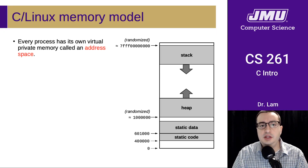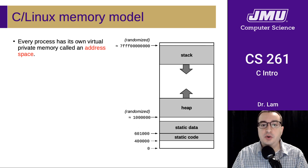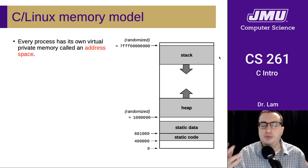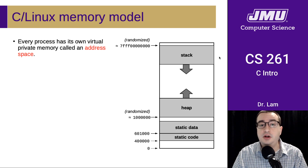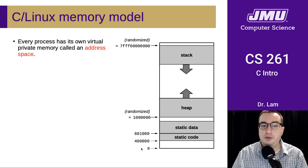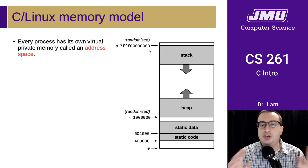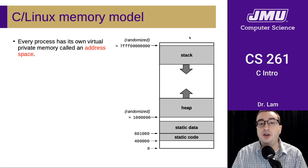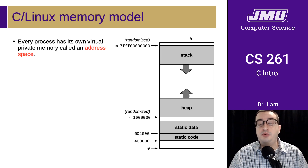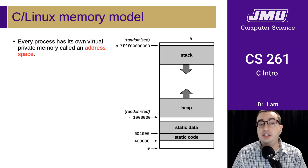Let's talk about the C/Linux memory model. This is a picture of a memory address space for a process. Every process running on the system has its own virtual address space. For now, you can think of this as all the memory in the system, from address zero at the bottom all the way up to the highest address. We're going to pretend that every process has its own exclusive access to all of memory — that's what we mean by address space, a large portion of memory where a process can store data and code.